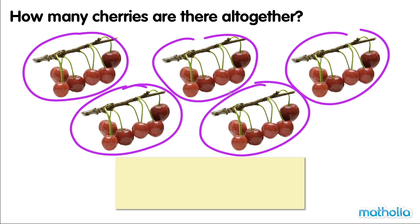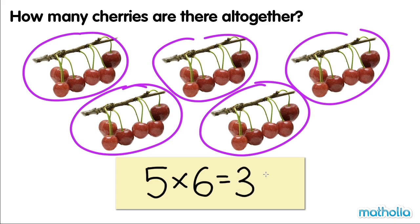In each group, there are six cherries. Five times six equals thirty. There are thirty cherries all together.